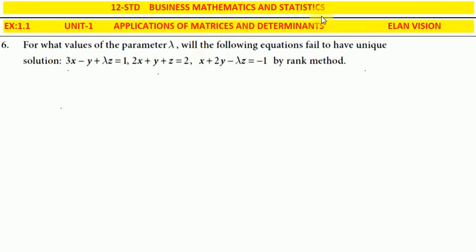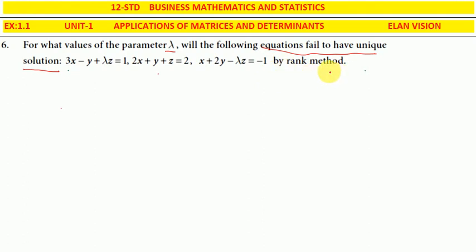12th standard business mathematics and statistics, Exercise 1.1, sixth sum. YouTube channel Elon Vision. For what values of parameter lambda will the following system of equations fail to have a unique solution? One more equation — fail to have unique solution.